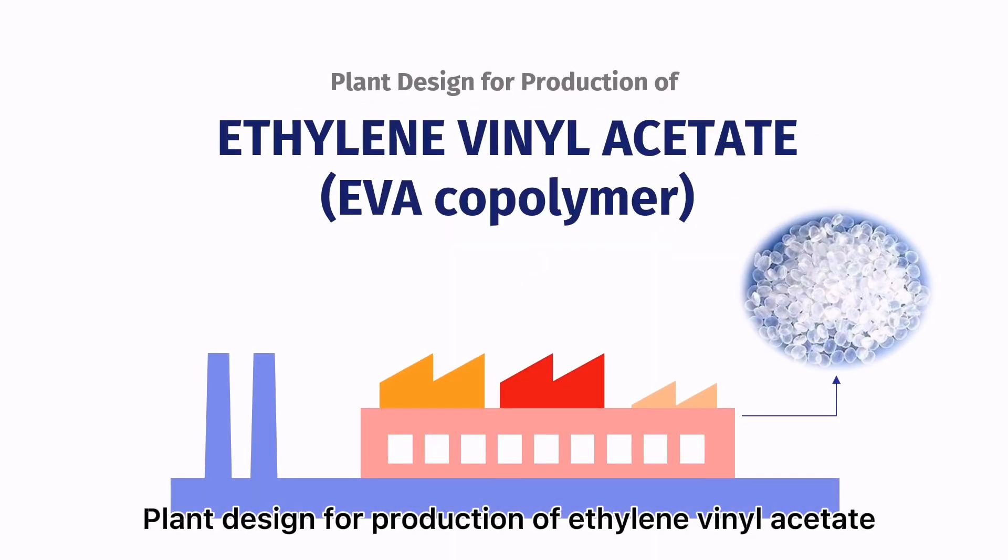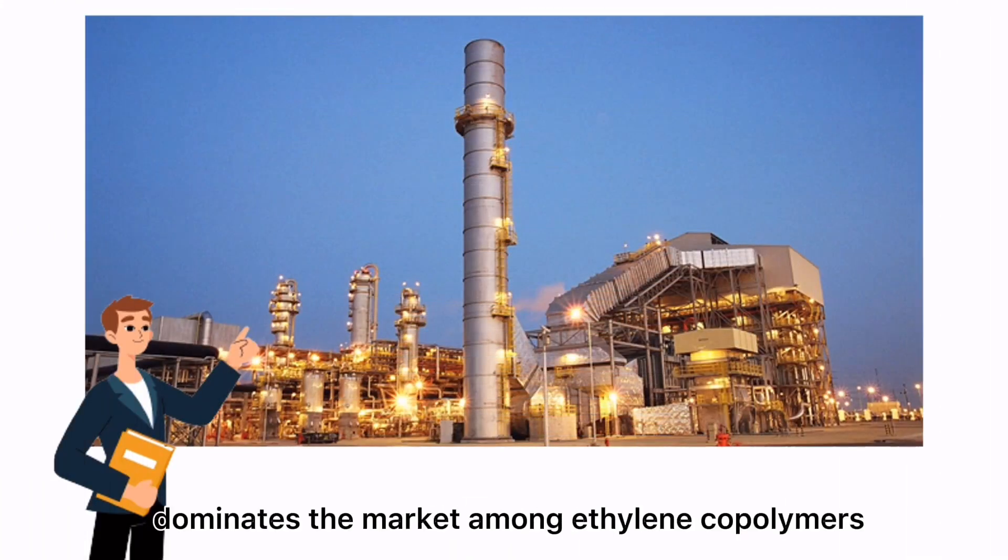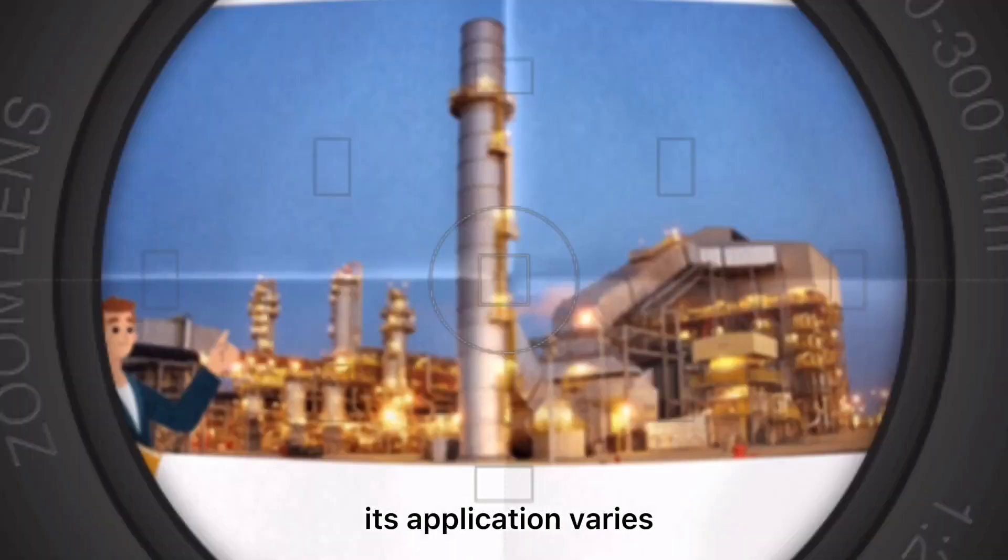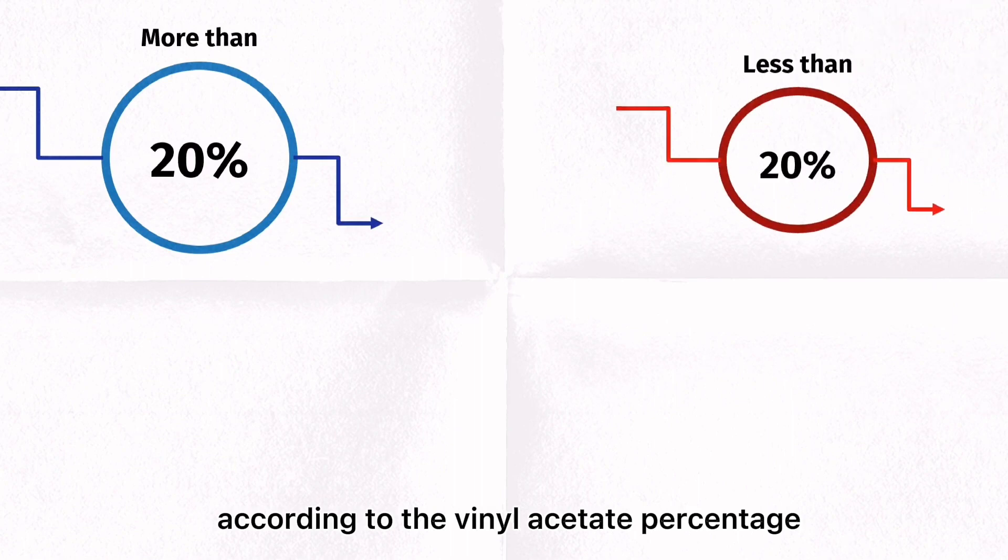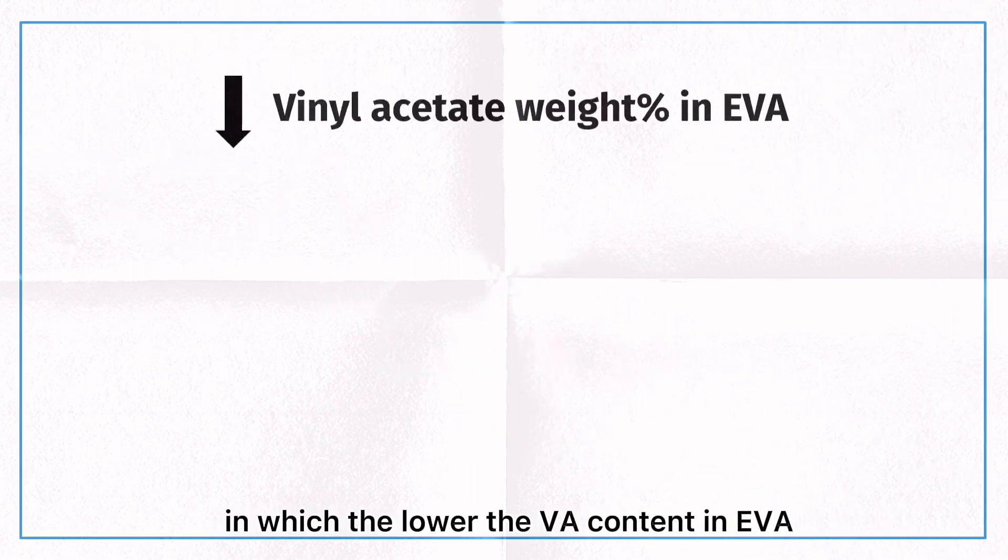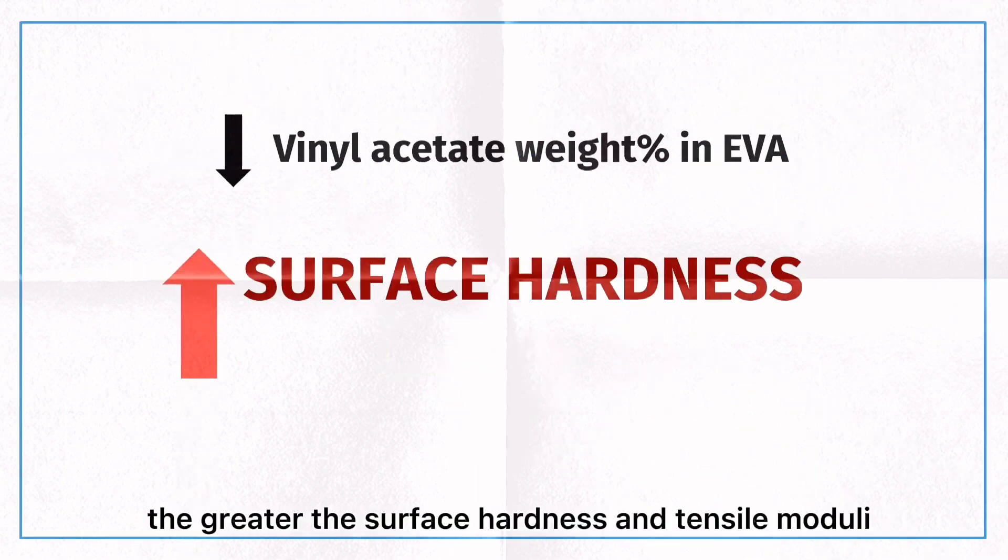Plant Design for Production of Ethylene Vinyl Acetate. Ethylene vinyl acetate or EVA copolymer dominates the market among ethylene copolymers. Its application varies according to the vinyl acetate percentage, in which the lower the VA content in EVA, the greater the surface hardness and tensile moduli.